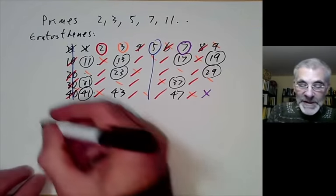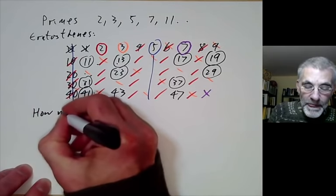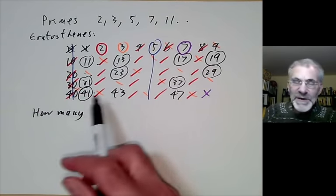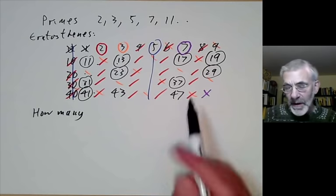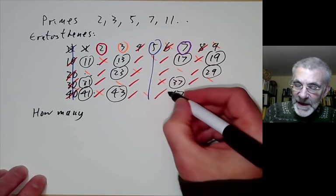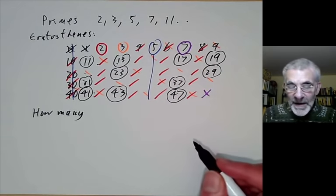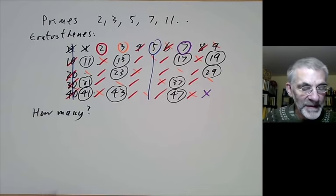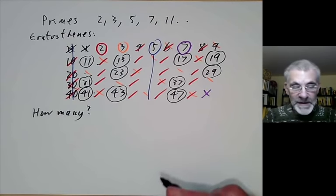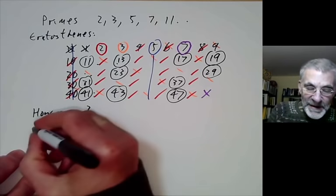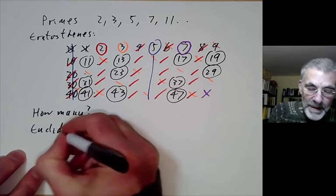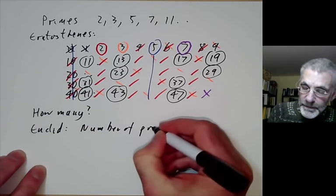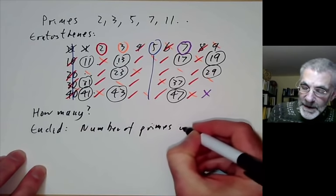The next question is: how many primes are there? Well, if we look at this table primes seem to be fairly common and there's no sign of them suddenly stopping. This suggests that the number of primes should actually be infinite, and this is the first theorem of number theory, due to Euclid: the number of primes is infinite.